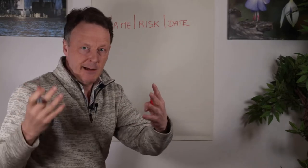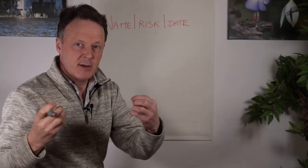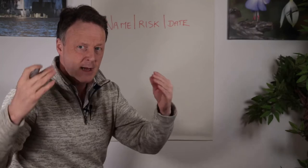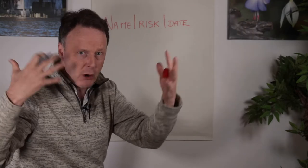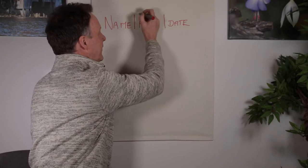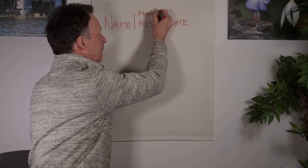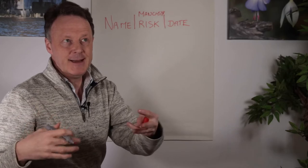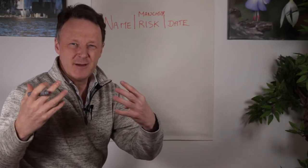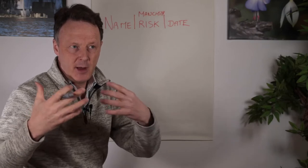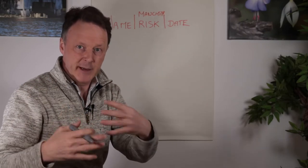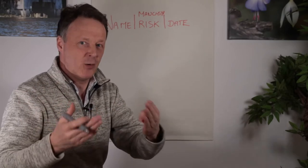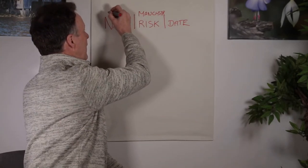Particularly if I'm going to see clients in another location, another piece of information I found really helpful was putting in the location of where I was meeting people, because that very quickly helped me jog my memory. So for example we'll say that this person was in Manchester. And then there was one other piece: if I go and see a client and I want to quickly get their phone number and I might not have it already in my mobile, I'd actually write the number up there too.